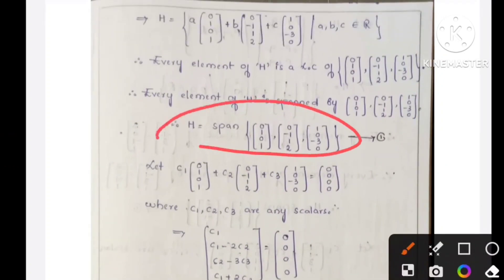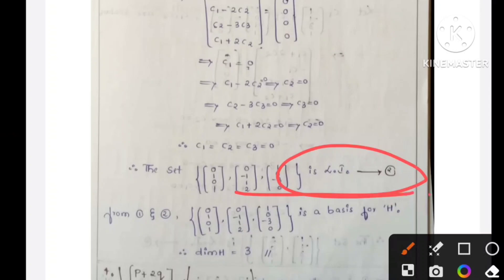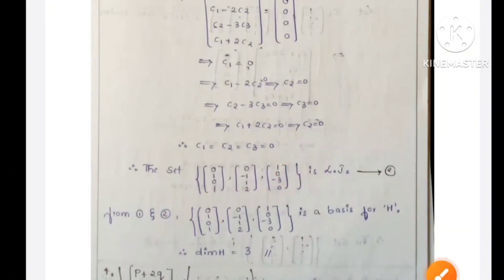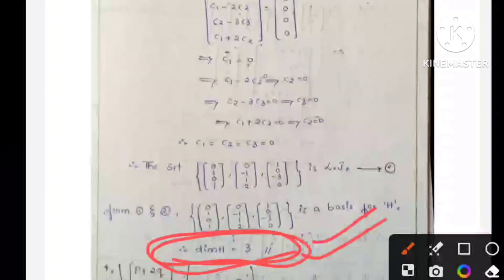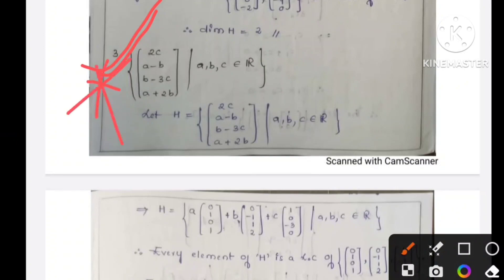H is spanned and the set is linearly independent from the first and second equations. The basis for H — dimension of H equals 2, giving 3 values formula. Dimension H question — this is the most important question to practice. It is a very easy question.